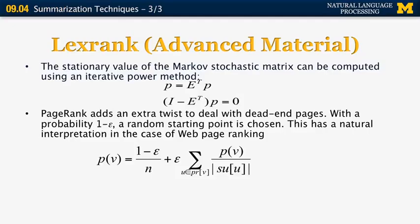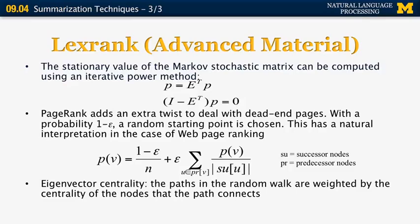Plus epsilon, the sum of the normalized values of the centrality for the adjacent nodes, where PR are the nodes that are connected to V. And eigenvector centrality is computed in the following way. The paths in the random walk are just weighted by the centrality of the nodes that the path connects.